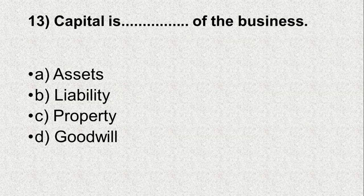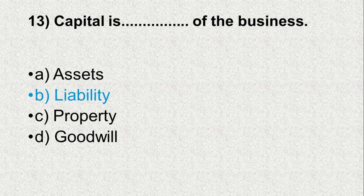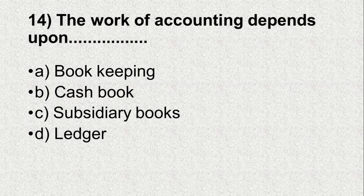Question number 13. Capital is dash of the business — Option A: Assets, B: Liability, C: Property, D: Goodwill. And the correct answer is B, Liability.